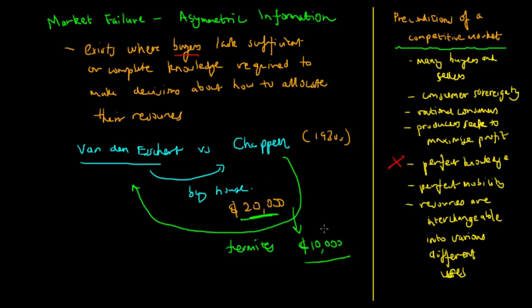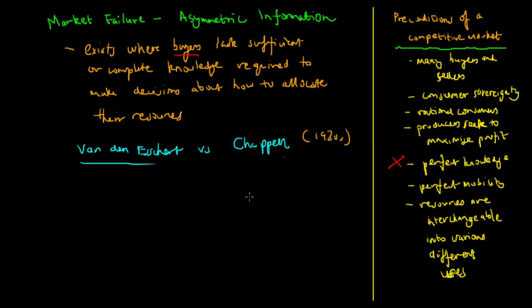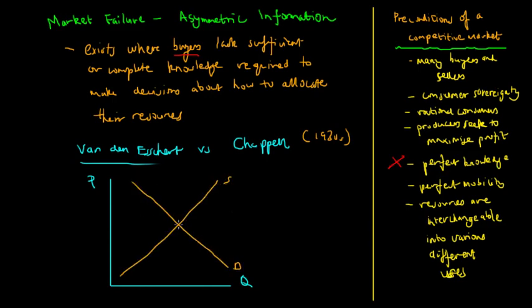We can apply this to a demand and supply graph. Using Van den Eshart and Chapel's case, we can apply this to a graph showing quantity demanded and the price at which it's demanded. This can apply to any market. Consumers reach an equilibrium price at, say, $10. This could be any market - shorts, shirts, etc. Depending on the equilibrium price, we can talk about different markets and how asymmetric information can affect them.